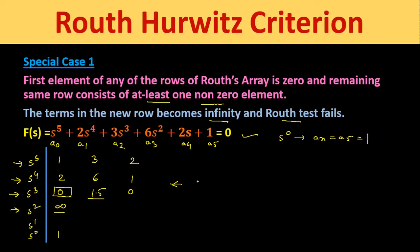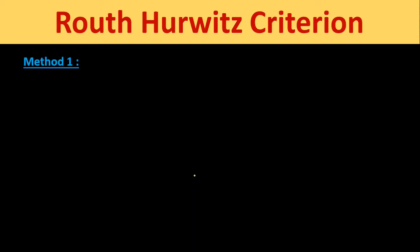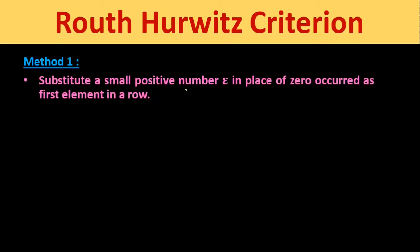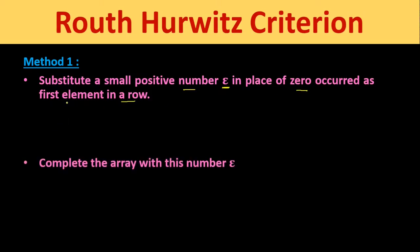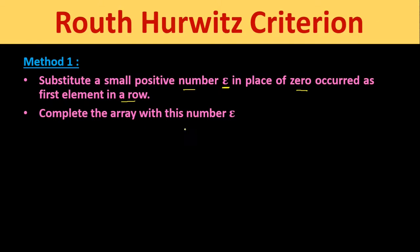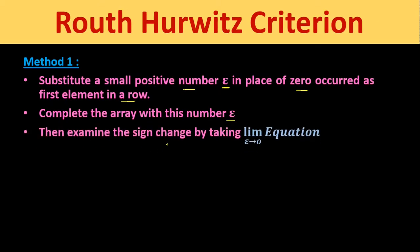To solve this type of difficulty, we have two methods. In Method 1, we substitute a small positive number epsilon (ε) in place of the zero that appears as the first element in the row. We then complete the array with this epsilon and examine sign changes in the first column by taking the limit as epsilon tends to 0.